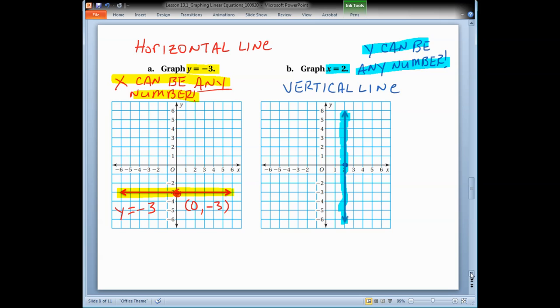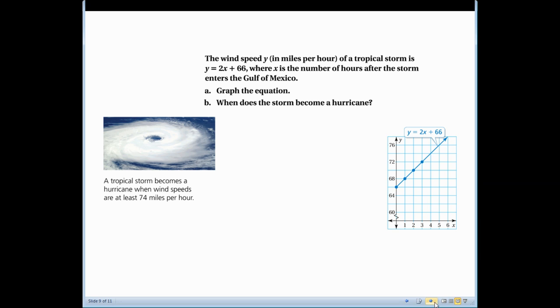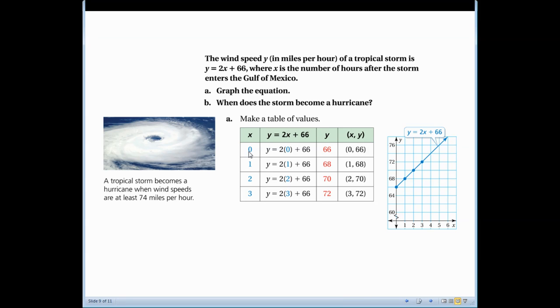So I think that's pretty much it. Or do we have one more? We got one more problem. Now we're going to make it real. So the wind speed in miles per hour of a tropical storm is y equals 2x plus 66, where x is the number of hours after the storm enters the Gulf of Mexico. So that's an actual equation. Weather forecasters might use that. So we want to graph the equation. So it's already been graphed over here. But how did we do that? You can see here, we picked four points on this one. Did you need four? No. You could have gotten away with three. Three is probably the minimum. We substitute the values for x. And we figure out what y equals. And that gives us our coordinates. Then you just plot them, draw a line through them.